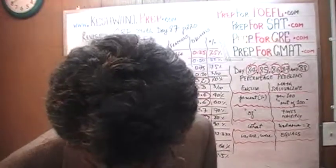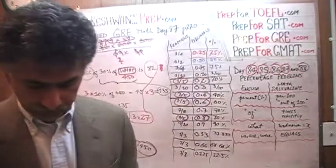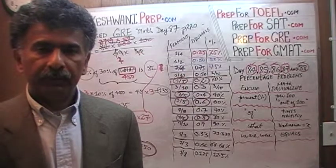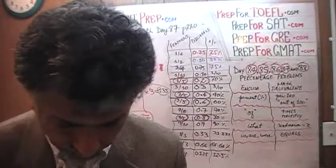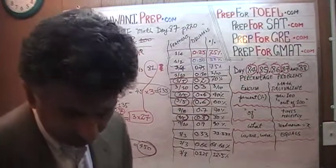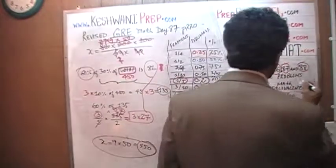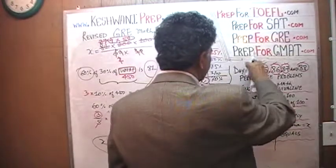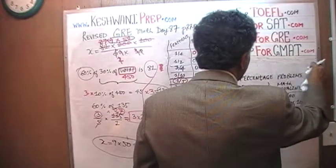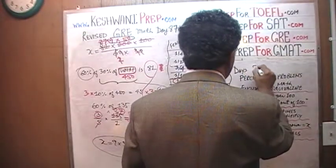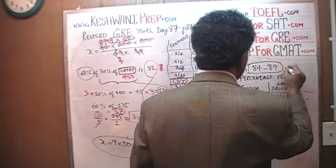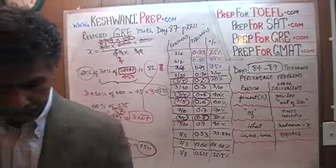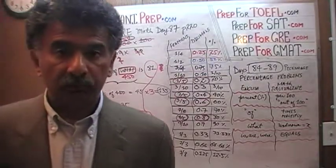That's it — we are done for today. I will see you tomorrow on day number 88 where we are going to do two more problems. And I have planned all the way up to day number 89 — it is day 84 through 89 for percentage problems. I will see you tomorrow when we will do some more percentage problems.